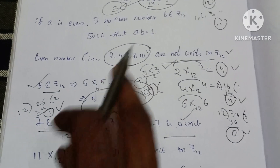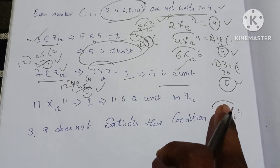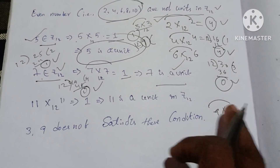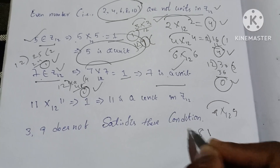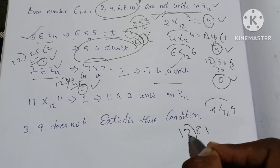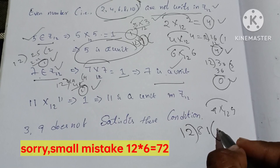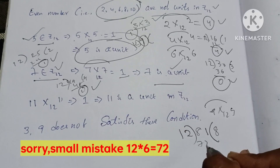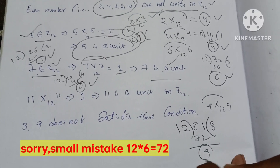Next, check 9. 9 into 9 is 81. 81 mod 12: 12×6 = 72, remainder is 9, not 1. So 9 is not a unit.